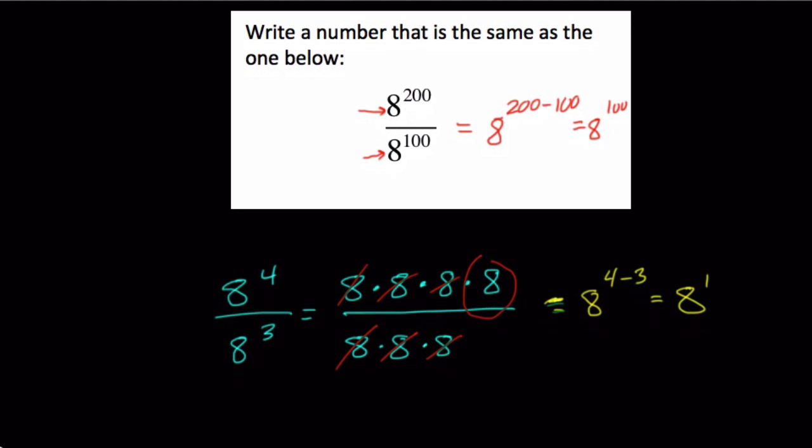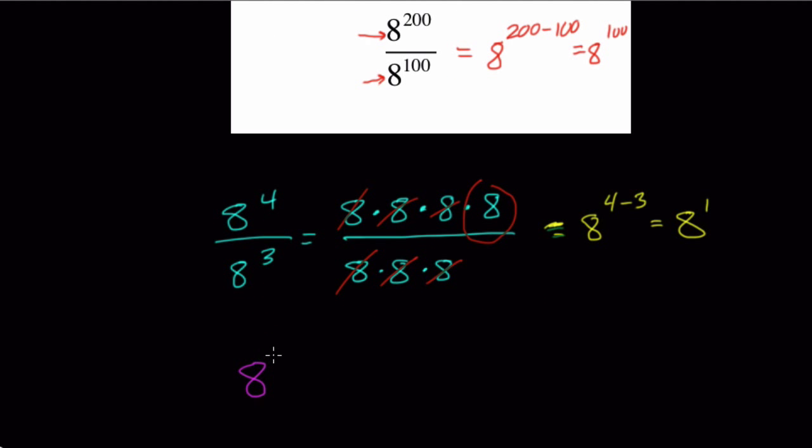The same is true here. You just have a more complex situation, right? It's 8 to the 200 over 8 to the 100.